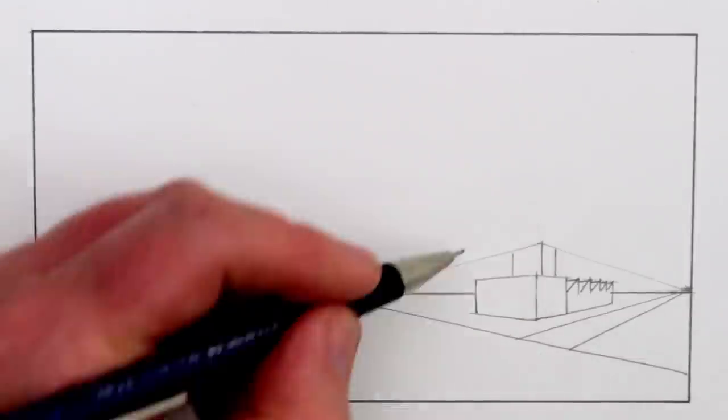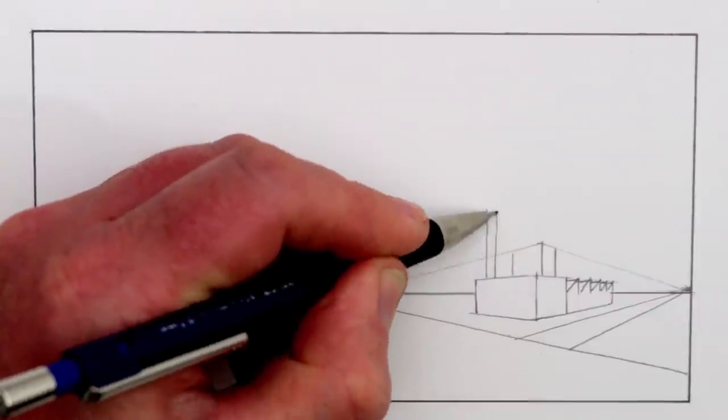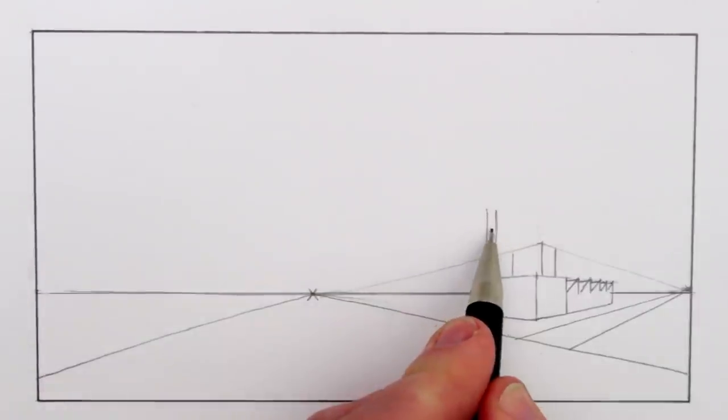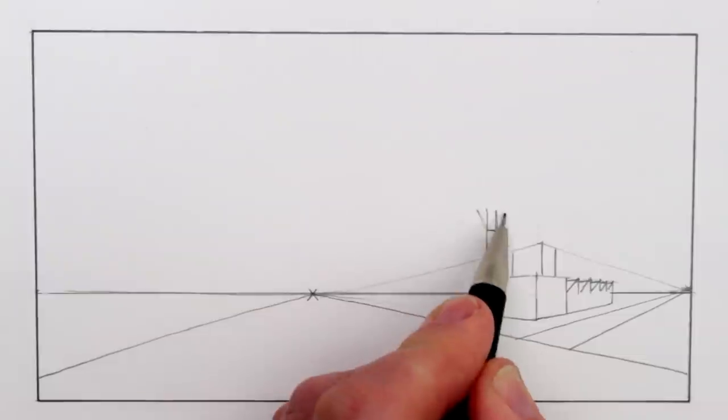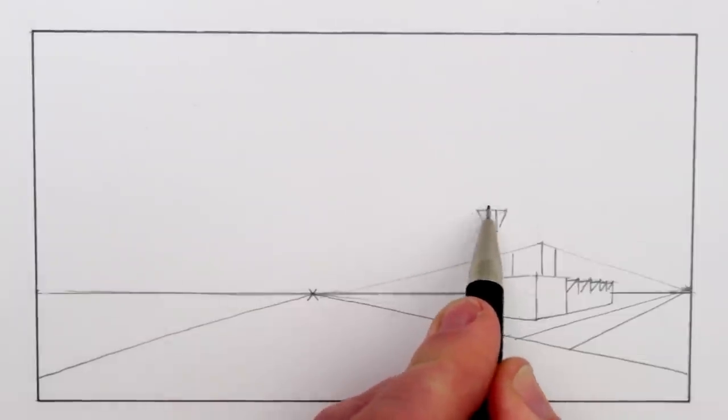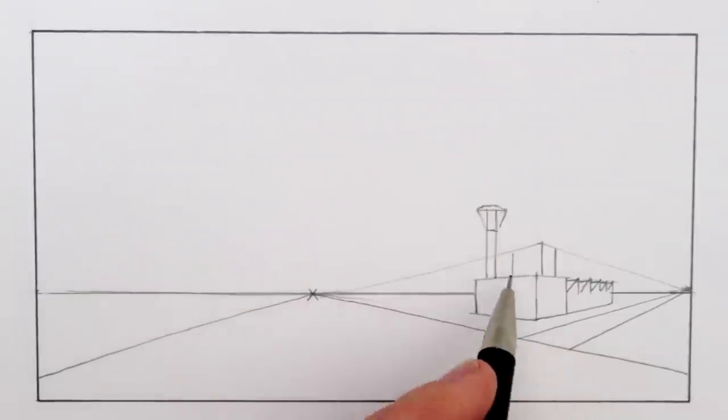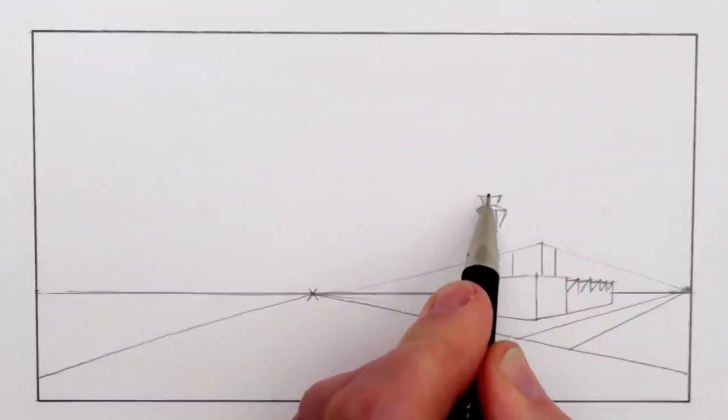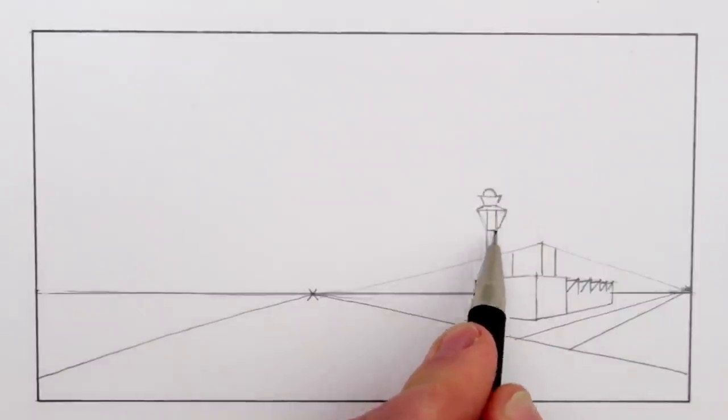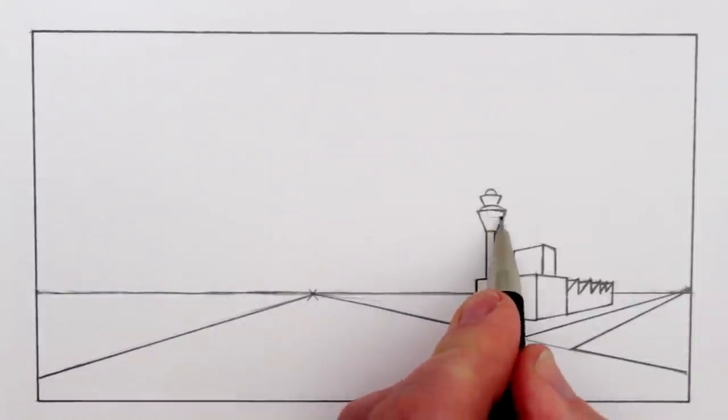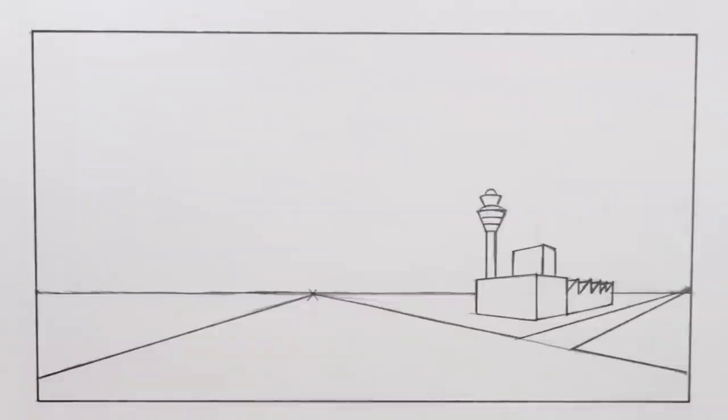We could draw an observation tower here, a tall thin tower with some pod-like shapes at the top of it. We could add a long viewing window at the top. At this stage there'd just be a couple of horizontal lines.